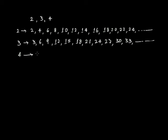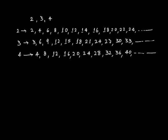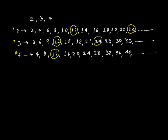For 4, the multiples are: 4, 8, 12, 16, 20, 24, 28, 32, 36, 40, and so on. Now let's find the common multiples of all three. Checking all three lists, we see that 12 appears in the multiples of 2, in the multiples of 3, and in the multiples of 4. Then 24 also appears in all three lists.